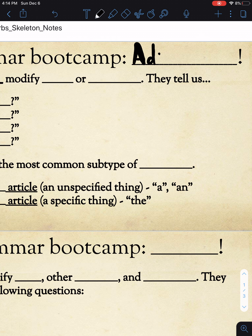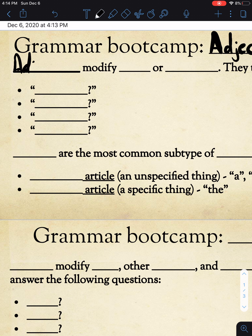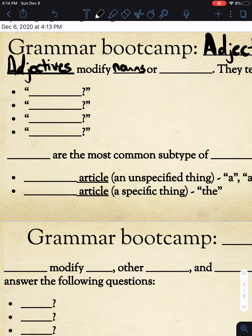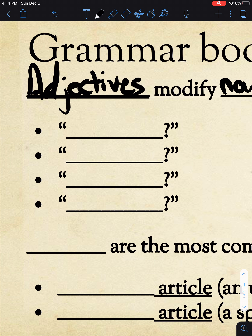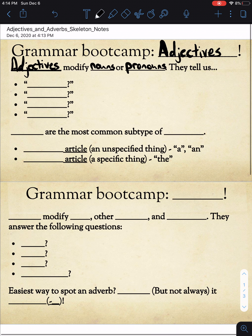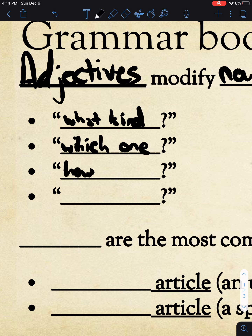The first one we're going to talk about is adjectives, and then we're going to move to adverbs. Adjectives modify nouns or pronouns. If you don't remember what nouns or pronouns are, go ahead and take a look at the notes from the first week of these grammar notes, a couple of weeks ago. Adjectives answer the questions: what kind, which one, how many, or how much.